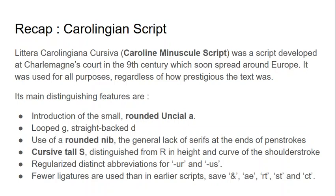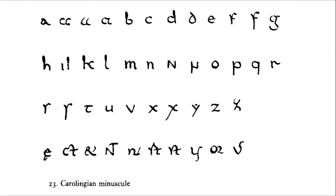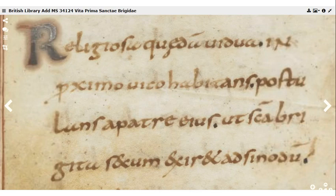Litera Carolingiana cursiva, or Caroline minuscule, was a script developed at Charlemagne's court in the ninth century and spread around Europe — we've got a whole video on that. It was used for all purposes regardless of how prestigious the text was. Its main signature features are the small round open A, looped G, straight-backed D, generally a rounded nib, and the consistent use of a cursive tall S.